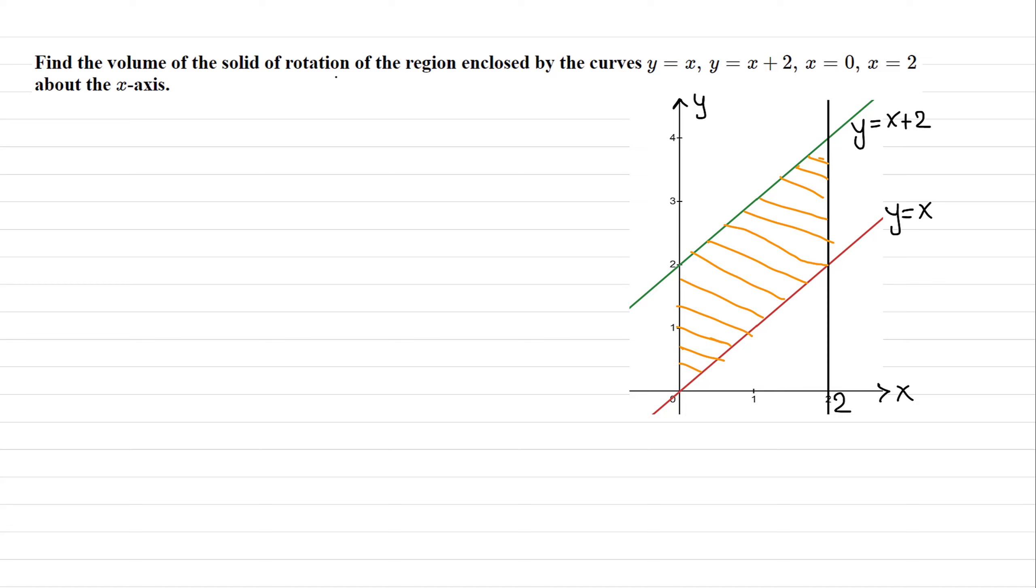Find the volume of the solid of rotation of the region enclosed by the curves y equals x, that's the identity line; y equals x plus 2, just shifted two units up; the curve x equals 0, that's the y-axis; and x equals 2, a vertical line. This shaded region is bounded by these four curves.